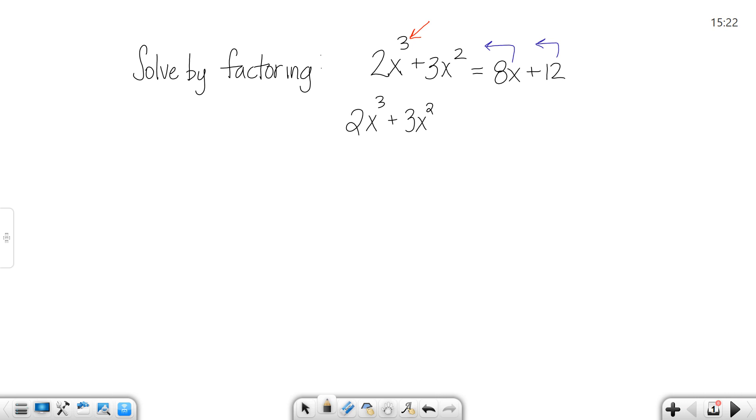When the 8x comes over, it becomes negative. When the 12 comes over, it becomes negative. You'll see that we have four terms. Four terms mean solve by grouping. So I'm going to group the first two and the second two.